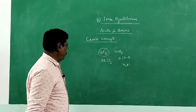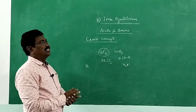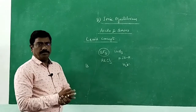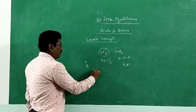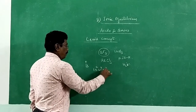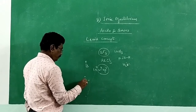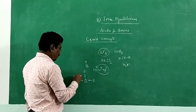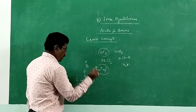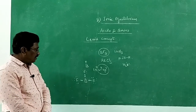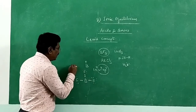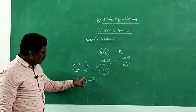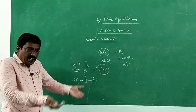Boron trifluoride is an electron-deficient molecule. Boron is in the 13th group; its atomic number is 5 and electronic configuration is 1s² 2s² 2p¹. It has three electrons in the valence shell. All three electrons are utilized for bonding with three fluorine atoms, giving three B-F bonds. So there are only six electrons around boron — a sextet structure. Boron is in need of one more electron pair; it is longing for one more electron pair.